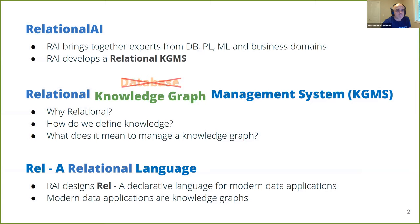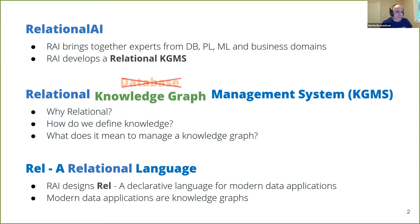The term KGMS is a spin on database management system, emphasizing that our system is designed for knowledge graphs but has the capabilities of a full-blown database management system. The KGMS uses a declarative language that we have named REL, specifically designed for knowledge graph applications. I only have 30 minutes, so I'll use examples and rely on your intuition. I'll spend time on why the system is relational, how we define knowledge, and what it means to manage a knowledge graph.